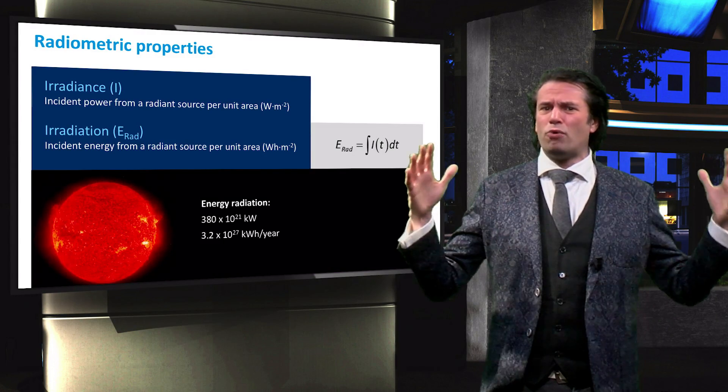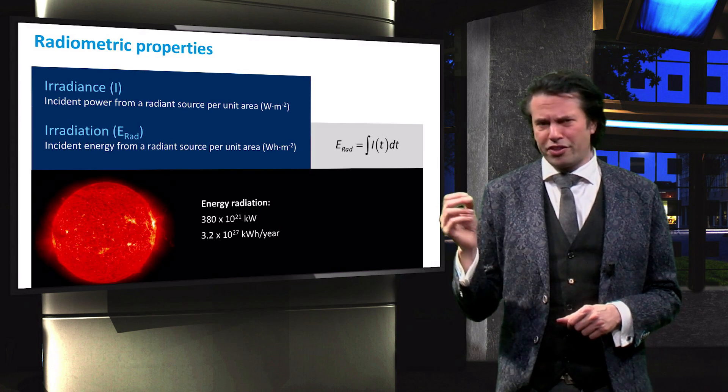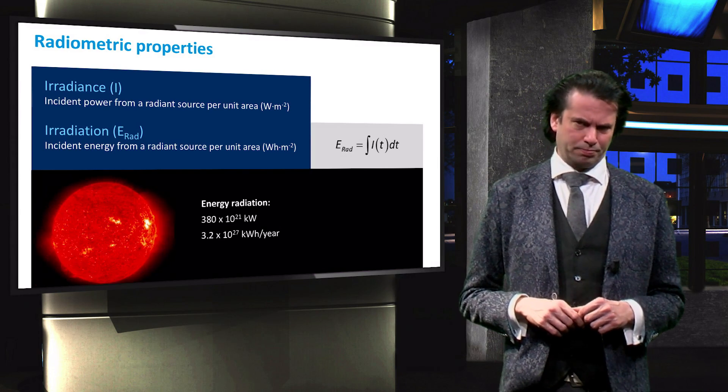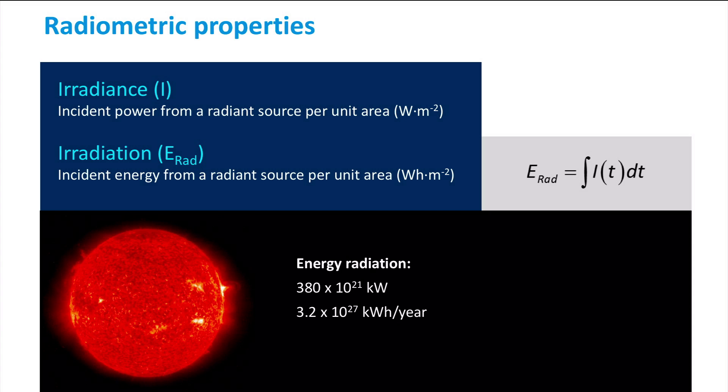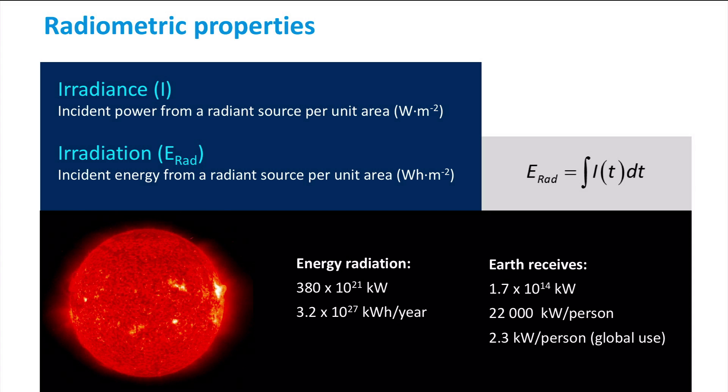The sun emits light more or less equally in all outgoing directions. Earth therefore only receives a tiny fraction of the power radiated by the sun. This tiny fraction sums to about 1.7 times 10 to the power 14 kW. To put that into perspective, this equates to roughly 22,000 kW per person on planet Earth.